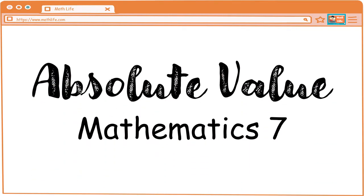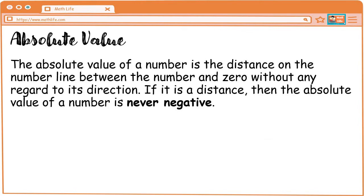Welcome, students, to another video lesson. In this video, I'm going to discuss the absolute value. When we say absolute value, the absolute value of a number is the distance on a number line between the number and zero, without any regard to its direction. If it is a distance, then the absolute value of a number is never negative.